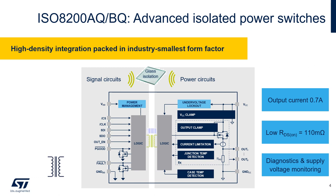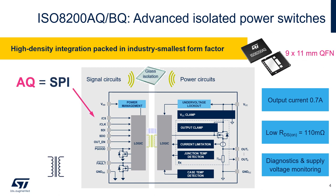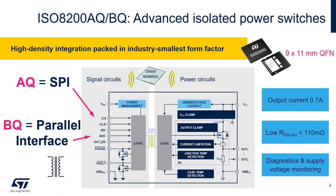ISO 8200BQ is an 8-channel power switch integrating two isolated domains separated by a glass insulation layer. Communication between the two sides is realized using an electromagnetic transformer structure and RF-modulated data transfer. This architecture brings outstanding performance in terms of noise immunity and data integrity. The IC is housed in a tiny QFN package and comes in two options: ISO 8200AQ provides a 20 MHz SPI, while the ISO 8200BQ has a parallel digital interface. Each channel is controlled by a low RDS(on) MOSFET and can supply an electrical load up to 700 mA. Any combination of channels can also be connected in parallel in order to deliver a higher current.